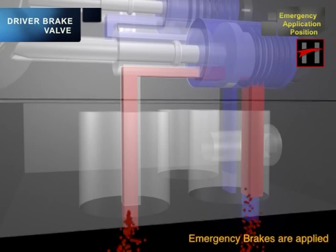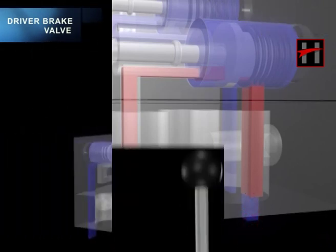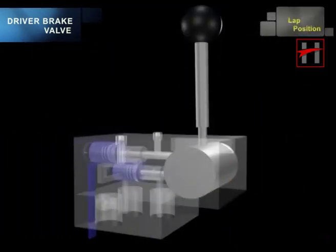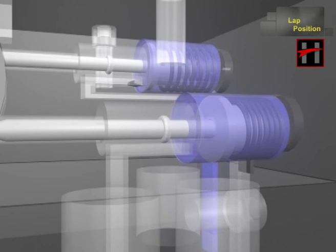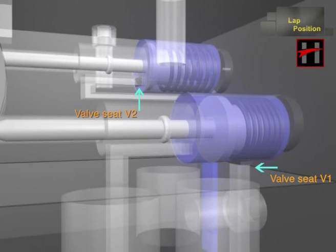As the handle is moved to position three, all the ports are shut off. That is, both the valve seats V1 and V2 are closed. There is no venting or charging of the brake pipes.